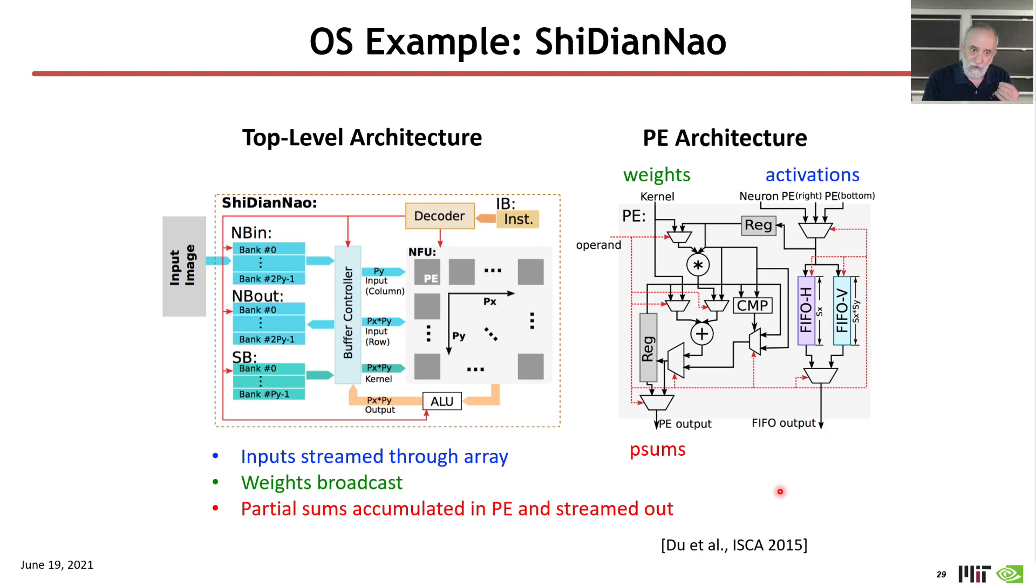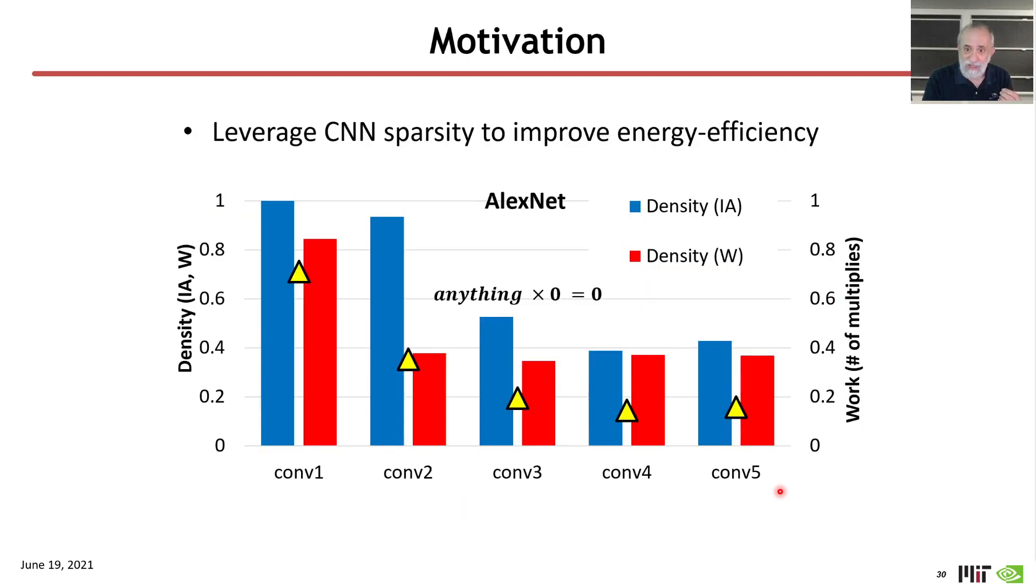So, what about sparsity? Well, we'd like to be able to take advantage of the fact that there is sparsity in the design. And so, this was a study that we did for calculating the amount of activity, the amount of computation activity that you would need to do, in the face of different densities. So, this was some data on an AlexNet network, and the two columns here are showing the density.